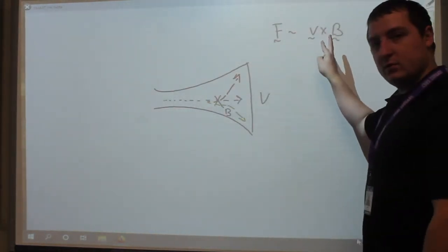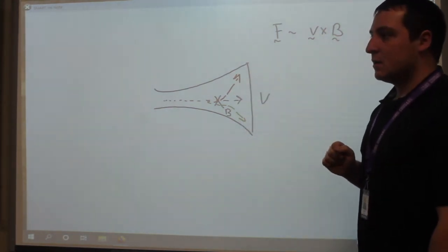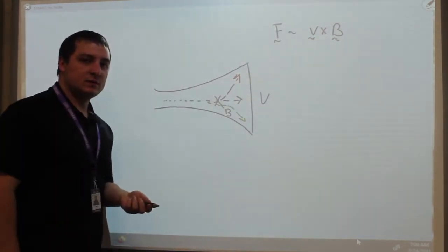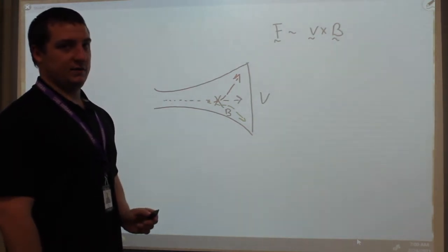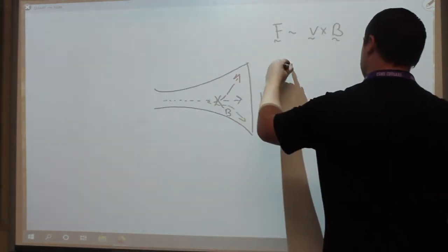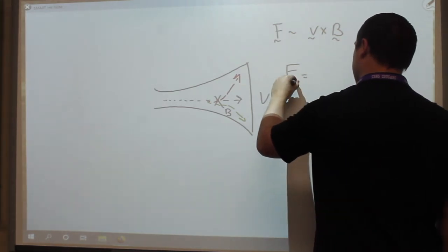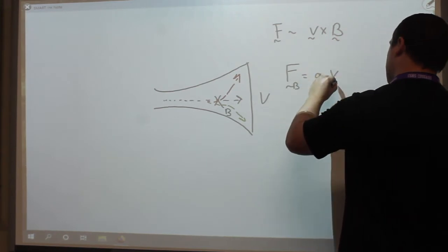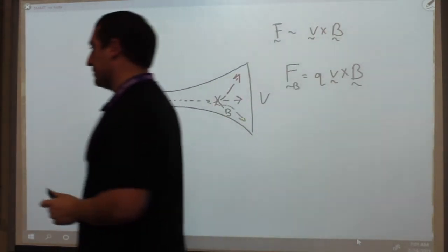Well, if we switched the order, it would definitely change the sign of the force and have the force going down. But we're missing something. Remember, electrons are negatively charged, and so that provides us also with a negative sign. So apparently the constant of proportionality here is the charge — that the force from a magnetic field, F_B, is the charge times the cross product of the velocity and the magnetic field vectors.